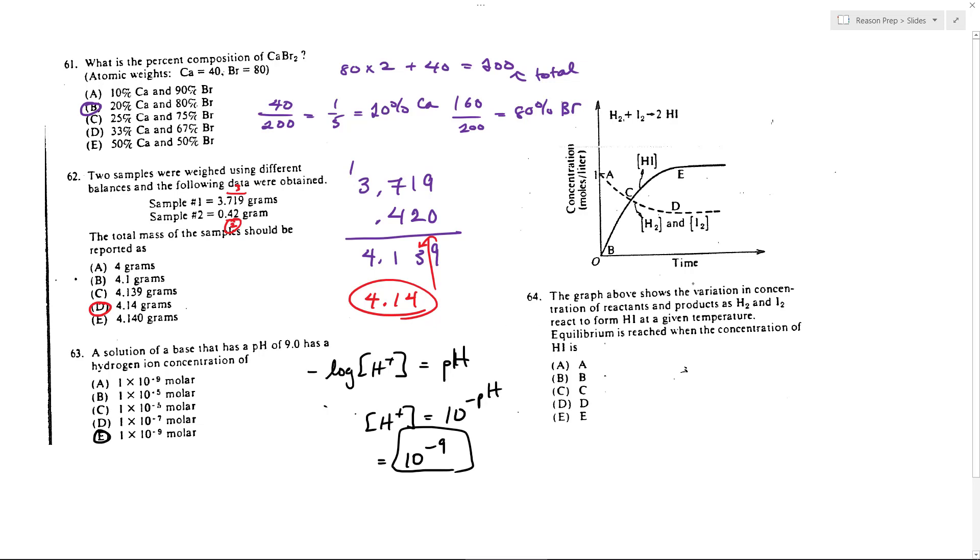Now going into 64, the graph shows the variation of reactants, concentrations of H2 and I2 forming HI. Equilibrium is reached when the concentration of HI is what? So we want to know when does this reach equilibrium, and we can see over time the amount of H2 and I2 is going down, while the amount of the compound HI is increasing. This is because as H2 and I2 react, they disappear and they form into the HI.